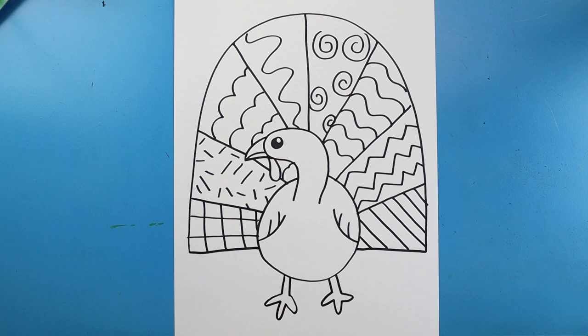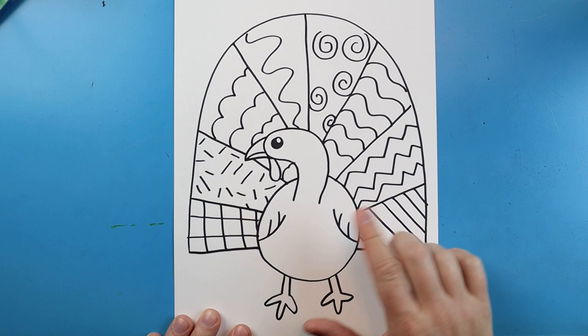Now the next step for you is to color your turkey. Now when you color it, you can color this however you want to. What I'm going to do is I'm going to stick with just a plain brown for my turkey. I think I'm just going to use some crayons.